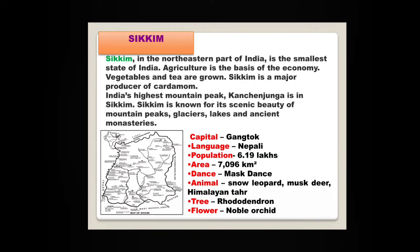Sikkim, in the northeastern part of India, is the smallest state of India. Agriculture is the basis of the economy. Vegetables and tea are grown here. Sikkim is a major producer of cardamom. India's highest mountain peak, Kanchenjunga, is in Sikkim. Sikkim is known for its scenic beauty of mountain peaks, glaciers, lakes and ancient monasteries. The capital is Gangtok. The language spoken here is Nepali.